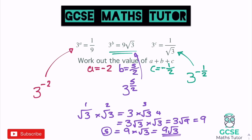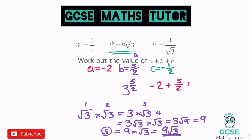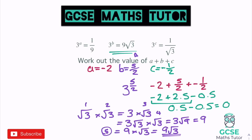Now adding a, b, and c together: minus 2 plus 5 over 2 plus minus a half. Converting to decimals: minus 2 plus 2.5 plus minus 0.5. Minus 2 plus 2.5 is 0.5, then 0.5 minus 0.5 equals 0. So the final answer for a plus b plus c is 0 — they all cancel each other out.